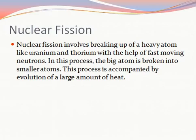Firstly, let us see what is nuclear fission. Nuclear fission involves the breaking up of a heavy atom like uranium and thorium with the help of fast-moving neutrons. In this process, the big atom is broken into smaller atoms, and this process is accompanied by the evolution of a large amount of heat.